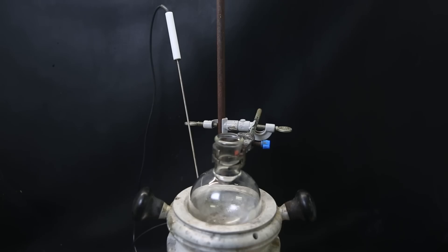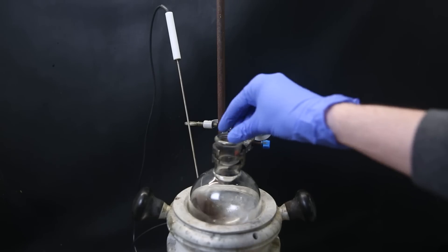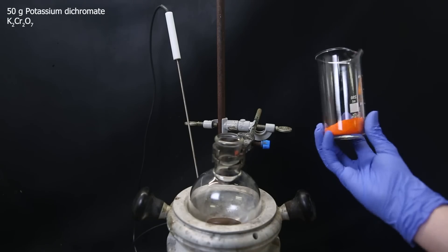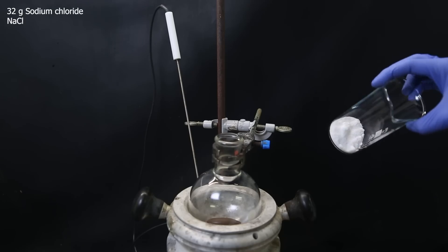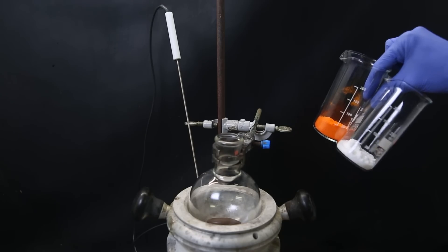So to get started with the chromochloride synthesis, I set up a flask in a heating mantle on a stir plate. I drop in a stir bar, and I then weigh out 50 grams of potassium dichromate, and separately 32 grams of sodium chloride. Now I will just mix them so that the reactivity is improved.